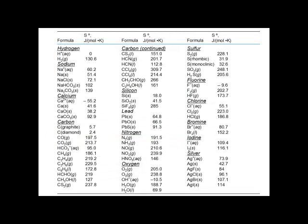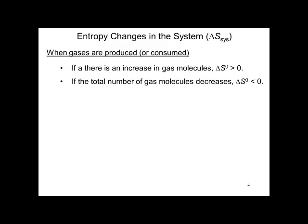Here's a table showing standard entropies for different materials. Let's consider entropy changes in a system when gases are produced or consumed. If there's an increase in gas molecules, delta S superzero is positive, greater than zero. If the total number of gas molecules decreases, then delta S superzero will be less than zero, negative.